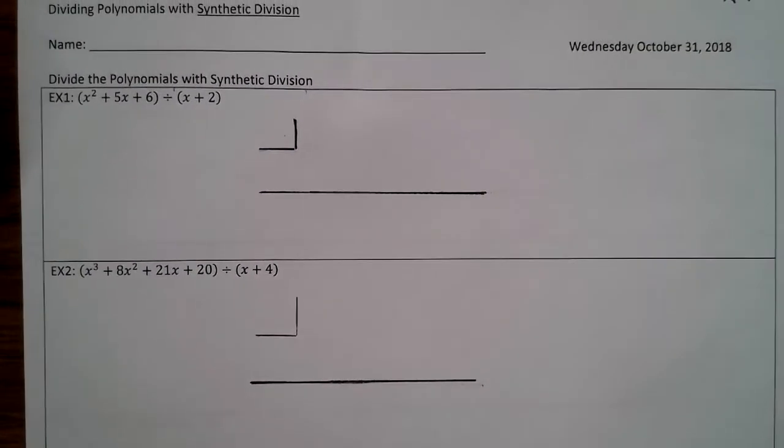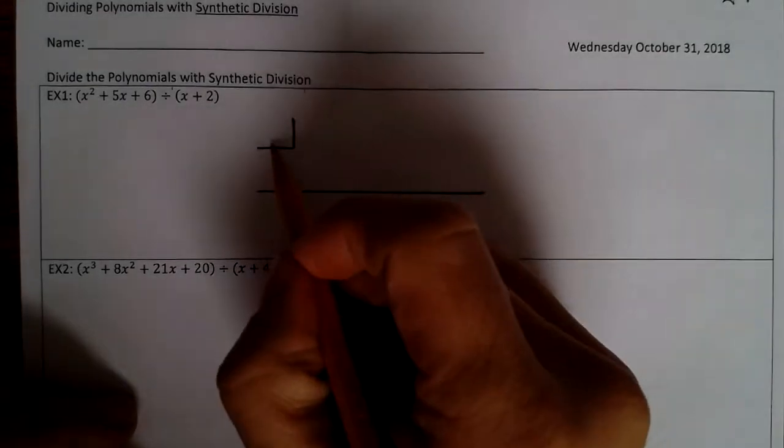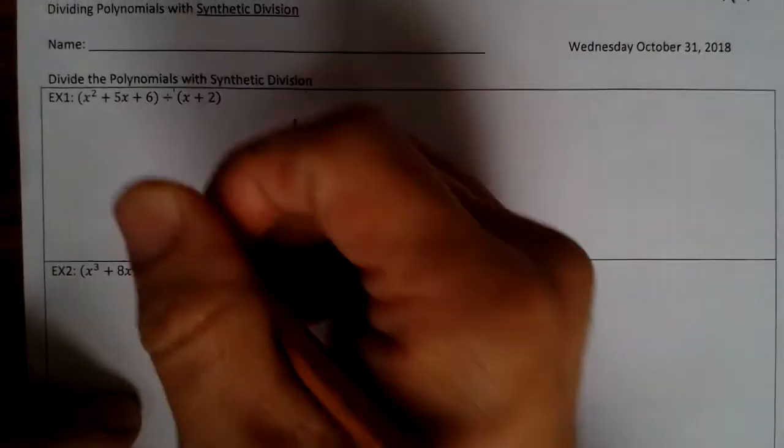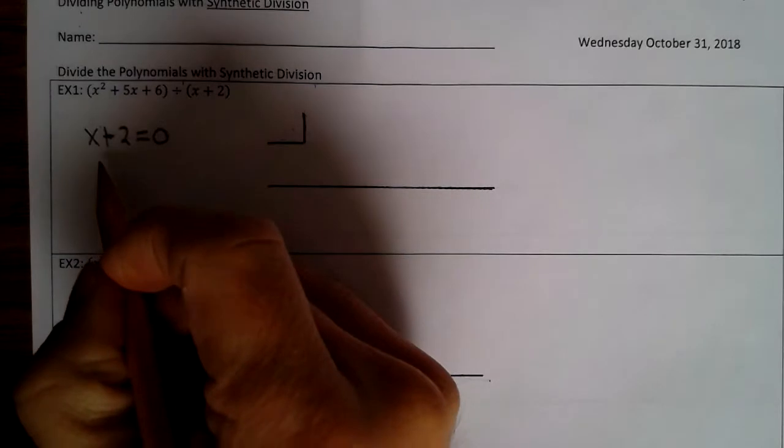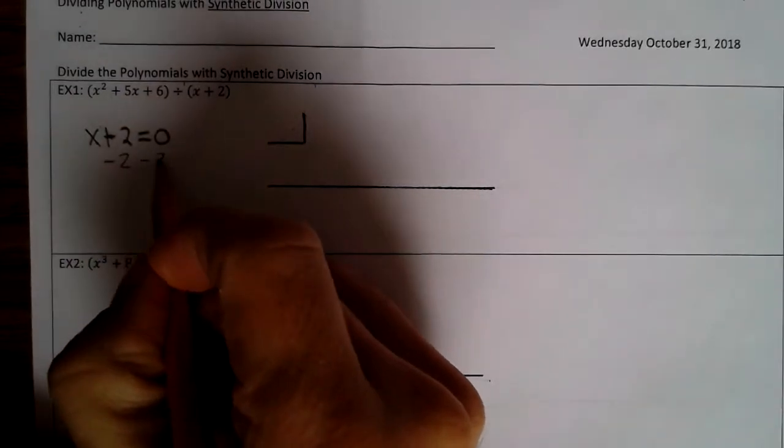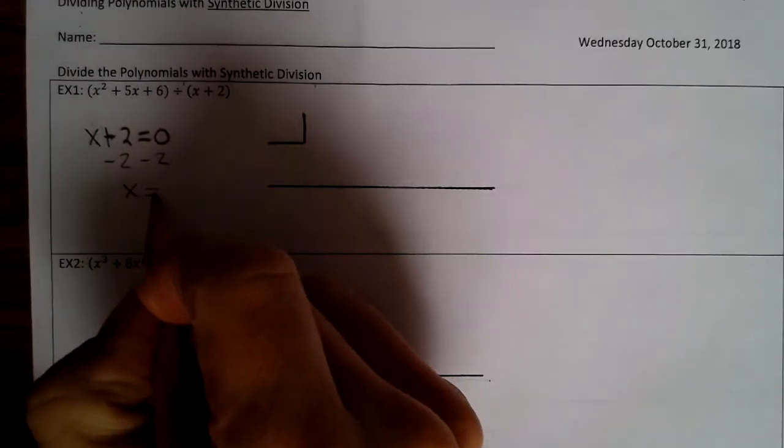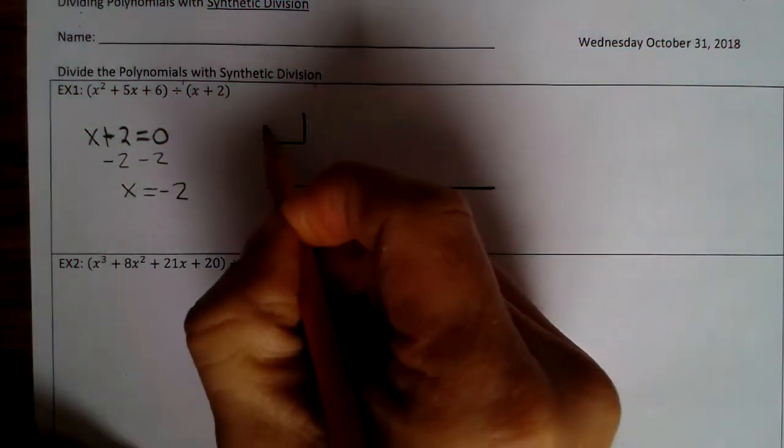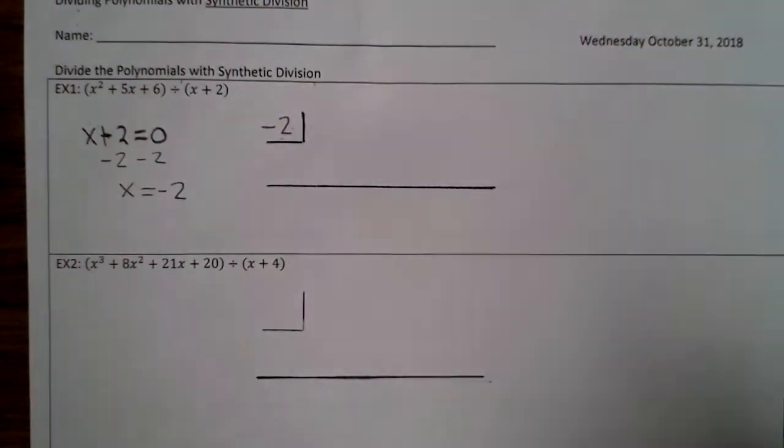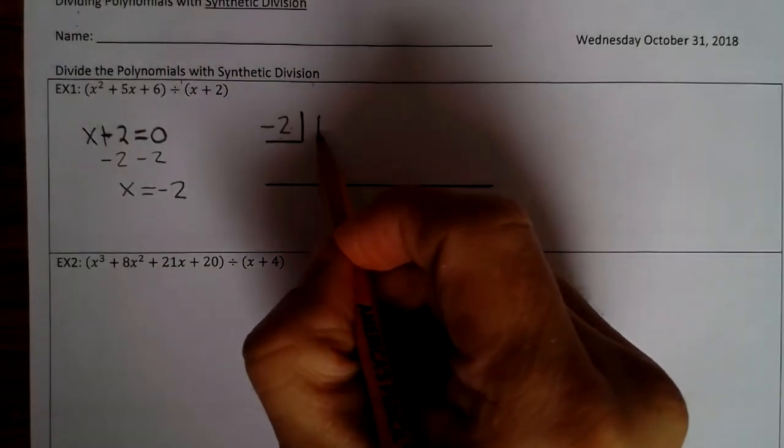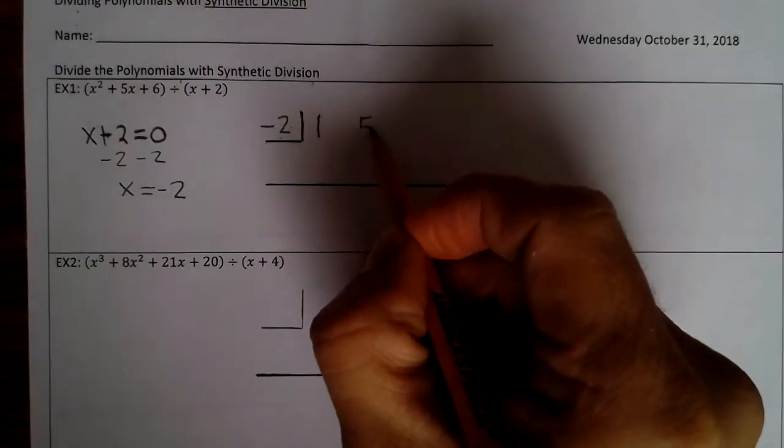Now, in essence, what you do to get this number right here, you take x + 2, set it equal to 0, and solve. Okay? So we subtract 2 from both sides. So x equals negative 2. So that number goes right here. Then you take the coefficients here, put them here. So that's 1x² + 5x + 6.